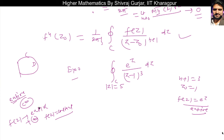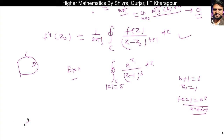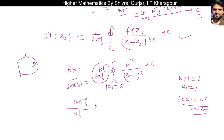When we say entire function, we talk about the finite complex plane only; we do not include infinity. So e^z is analytic in the finite complex plane — it is an entire or integral function. The conditions of the derivative formula are satisfied here.